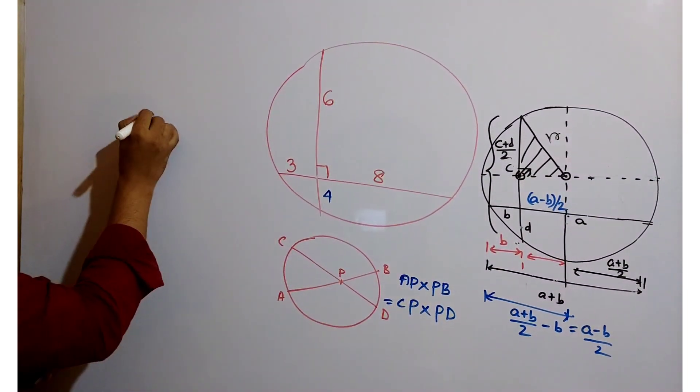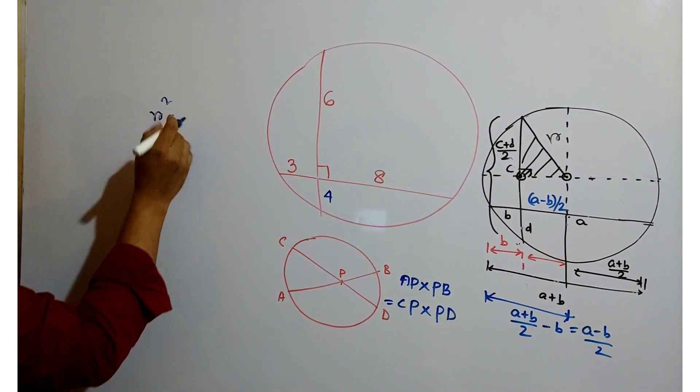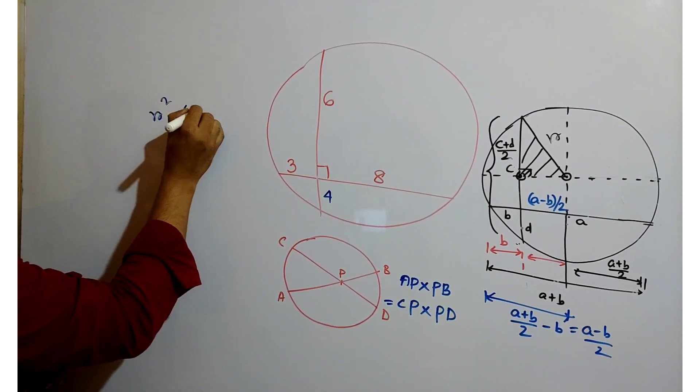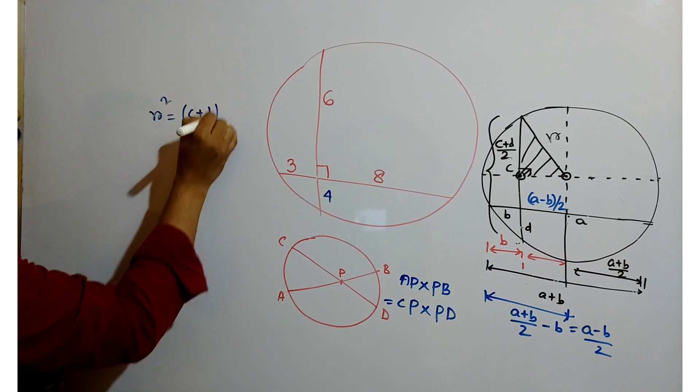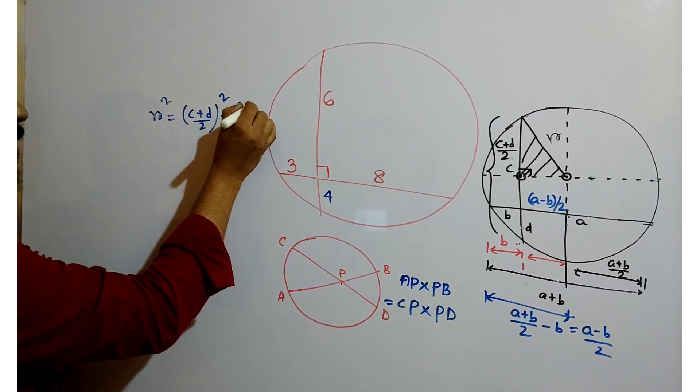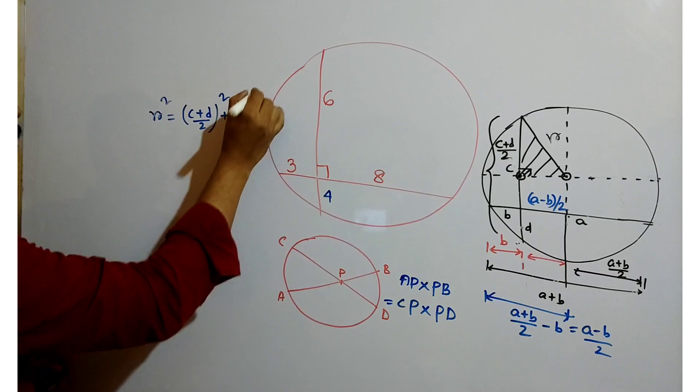So we can easily write down R square which is equal to C plus D by 2 whole square plus A minus B by 2 whole square.